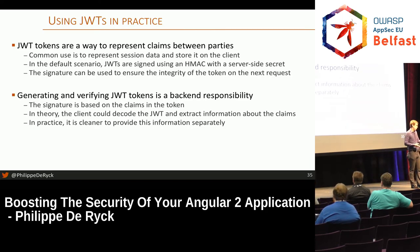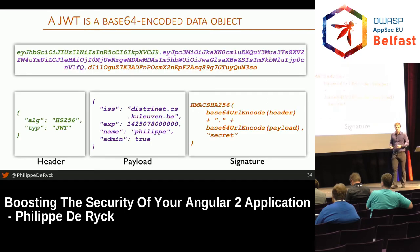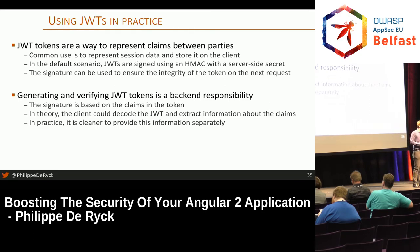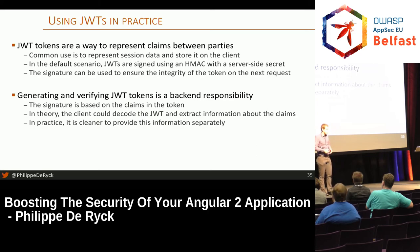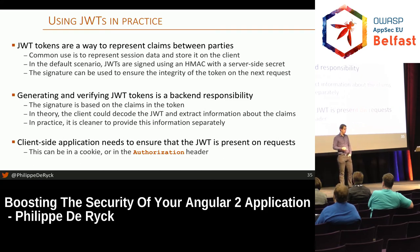The backend should generate tokens and verify their integrity before handling them. A common mistake is forgetting to verify the signature — just decoding it to get the data out, since it's base64 encoded. Another mistake is client applications decoding the JWT and extracting information from it, making the app dependent on the server's token format. If you need that information, send it in a separate JSON response instead. The Angular application needs to handle the JWT transport as we covered in the session management section.